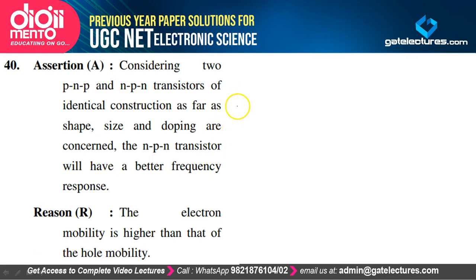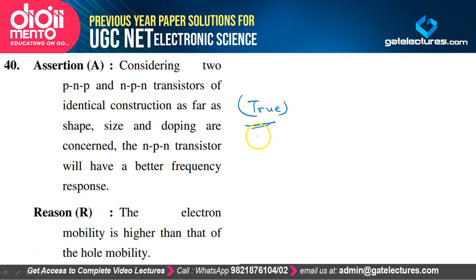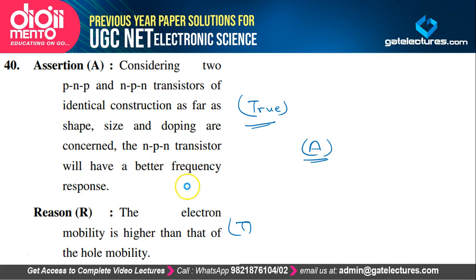Considering two PNP and NPN transistors of identical construction, the NPN transistors have better frequency response — true, because electrons are the majority charge carriers and have greater mobility than holes. Both A and R are true, and R is the correct explanation of A. Option A is the correct option.